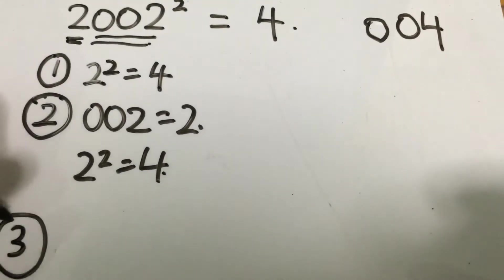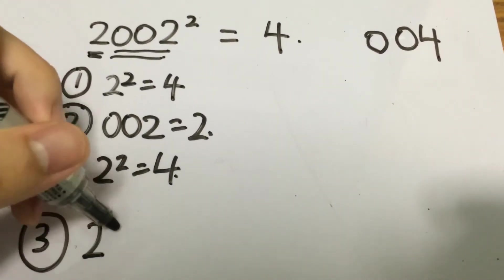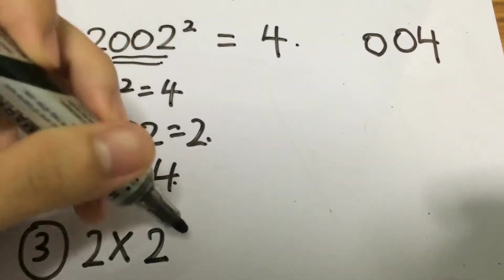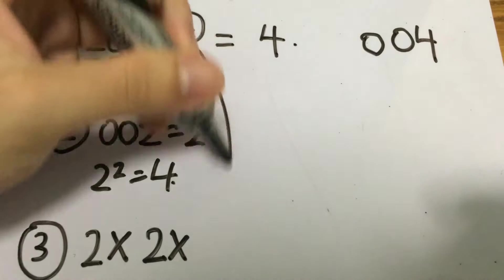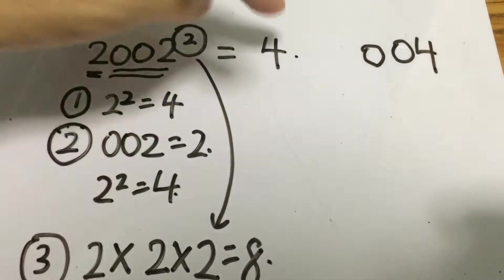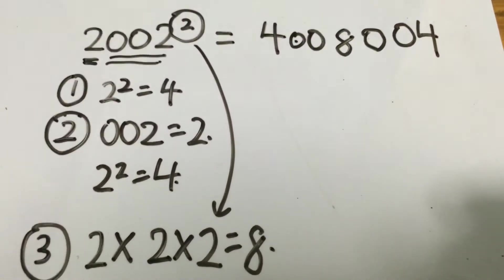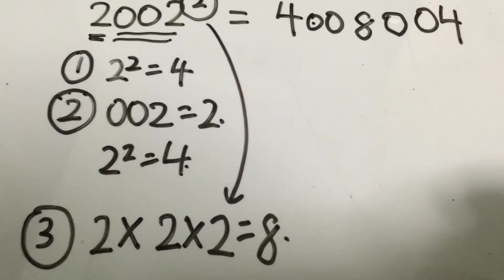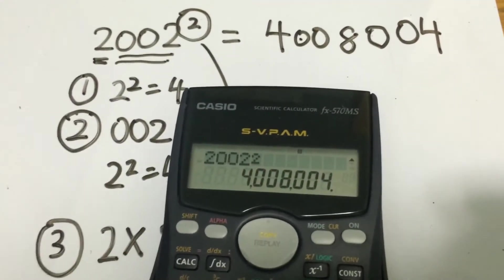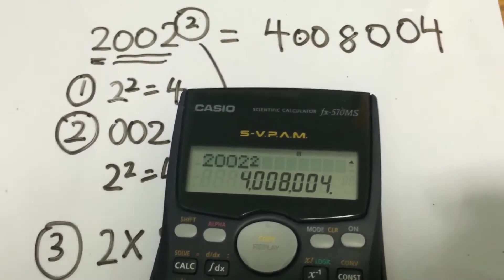Last but not least, we take the first digit — in this case 2 — and multiply by the last three digits, which is 002, that is 2, and multiply by the power, which is 2. That gives you 8. But when you write down the answer, instead of putting just 8 alone, you write 008. So the final answer: 2002 squared gives you 4,008,004. And we verify using our calculator — the answer is the same.